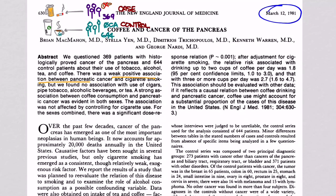Getting back to the abstract: there was a weak positive association between pancreatic cancer and cigarette smoking, but no association with cigars, pipe tobacco, alcohol, or tea. However, they did find a strong association between coffee consumption and pancreatic cancer in both sexes. The association was not affected by controlling for cigarette use — which is important because in the 80s people often smoked while drinking coffee, so you need to control for cigarettes so you can't blame the cancer on them instead of the coffee.